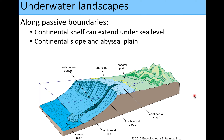At passive boundaries, you have continental crust — the thicker crust — transitioning to thinner oceanic crust. There is usually a continental shelf: a portion of continental crust that is actually underwater. The entire thick piece, including the submerged shelf, is still considered continental crust and continental lithosphere. Then there is the continental slope, where you have the sharp transition from thick continental crust to thin oceanic crust.